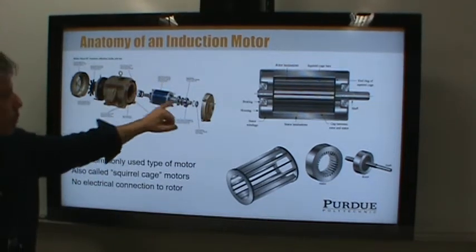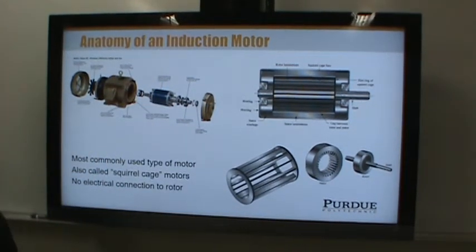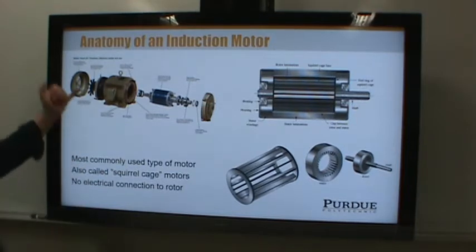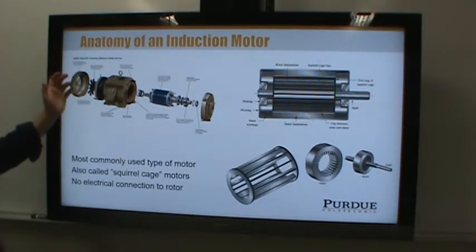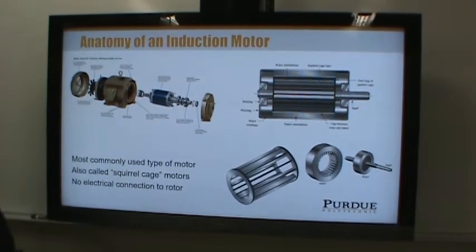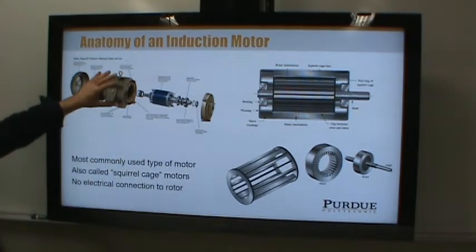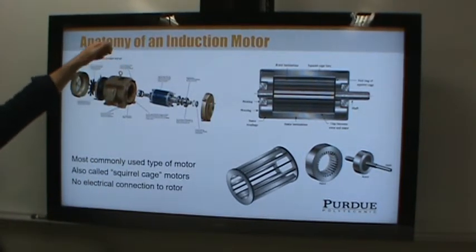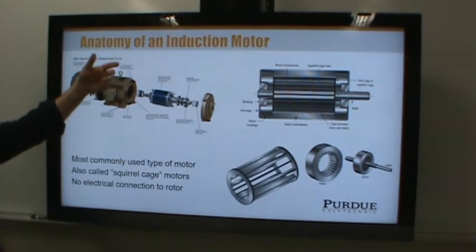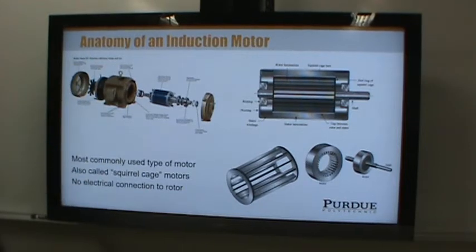Typically we've got bearings, seals, and all kinds of interesting things on either end of the rotor. It's pretty common to also have a fan to blow air over the motor and keep it cool. This is more of an industrial motor — it's got an eye hook at the top because it's very heavy, so you'd have to use a crane to move it around.